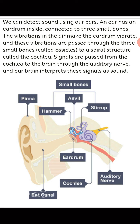The inner ear consists of the auditory nerve, from which the sound waves go to the brain. If there are vibrations in the air, the eardrum starts vibrating, and these vibrations are passed through the small bones inside the ear, which are called ossicles. From the ossicles, the vibrations pass on to the spiral structure called the cochlea. From the cochlea, the auditory nerve takes the sound waves to the brain, which interprets these signals so we can detect the sound.